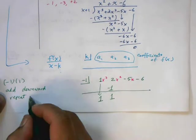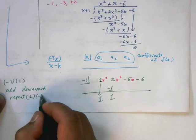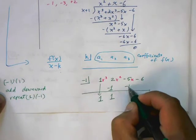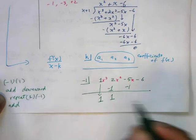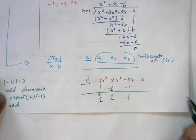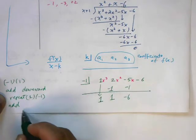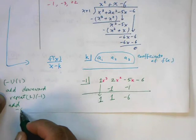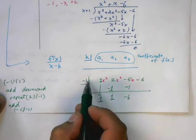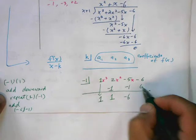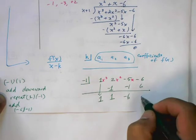1 times negative 1. That gives me negative 1. Add. Gives me negative 6. Multiply. Negative 6 times negative 1. This number times this number. That gives me 6. And then, add again. This gives me 0.